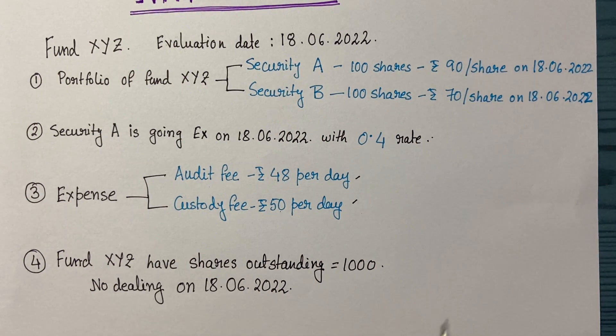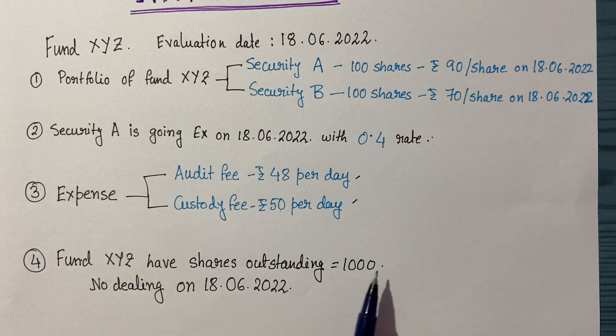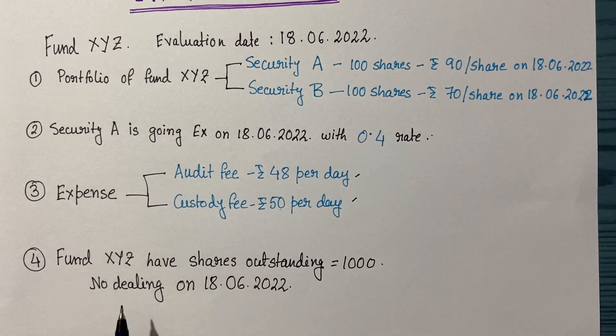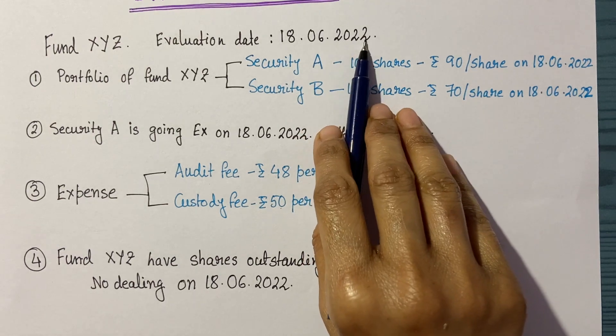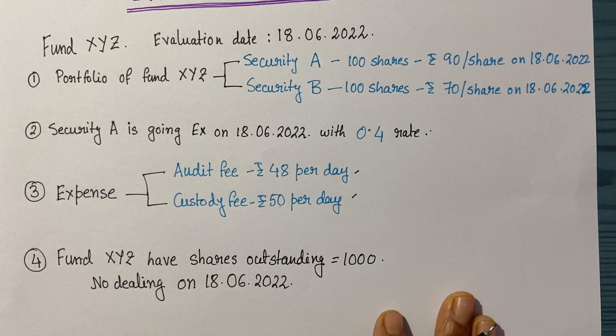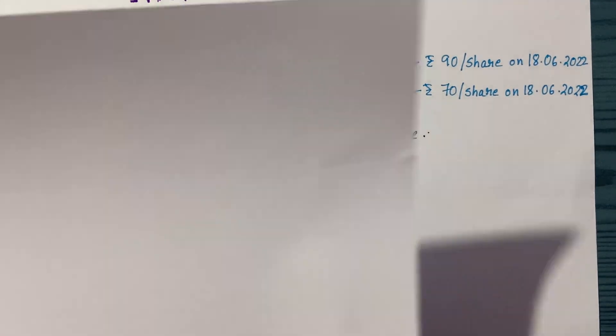Next, fund XYZ has shares outstanding of 1,000. On the day I'm using as an example, 18th June, there's no dealing happening for this fund. Now let's see how we're going to evaluate the NAV for this fund.